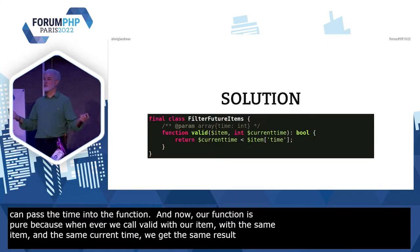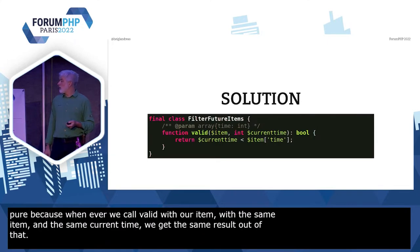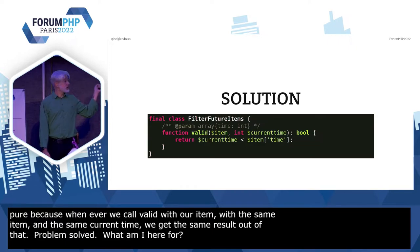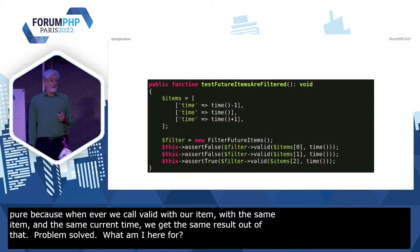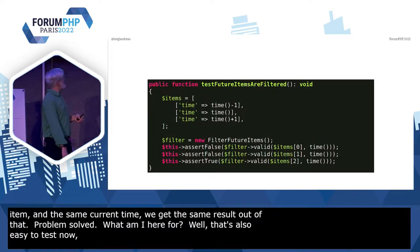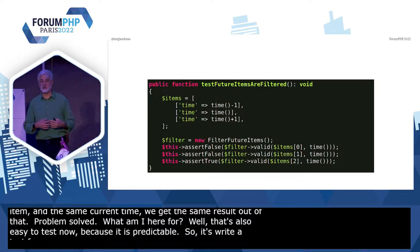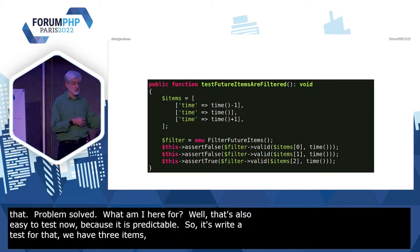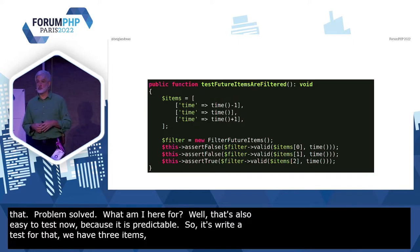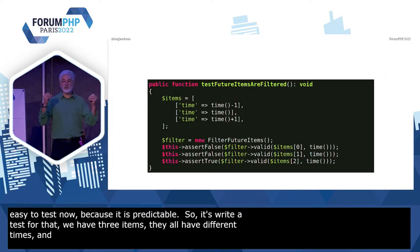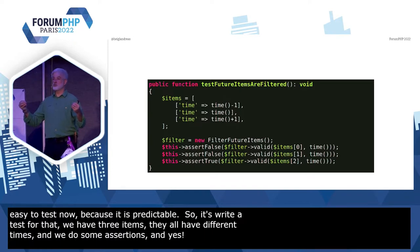Problem solved. So what are we here for? Well, that's also easy to test now, because it's predictable. So let's write a test for that. We call that with three items, they all have different times, and we do some assertions, and everything works, doesn't it? Who spots the problem?